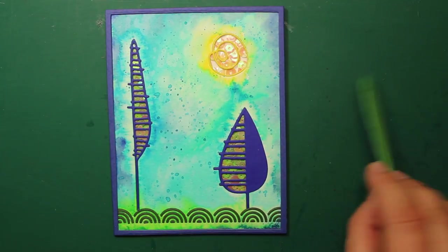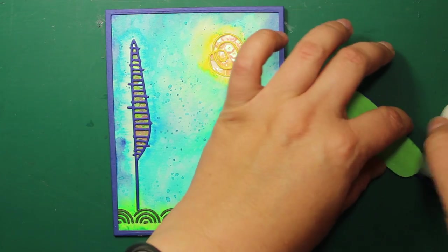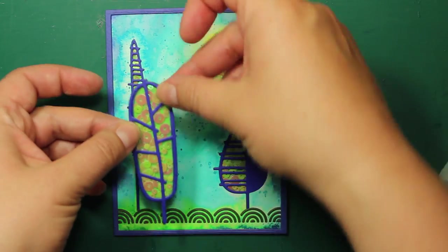Because this shaker element is freestanding, we can overlap the trees that are already in the background. And it will also add some dimension.